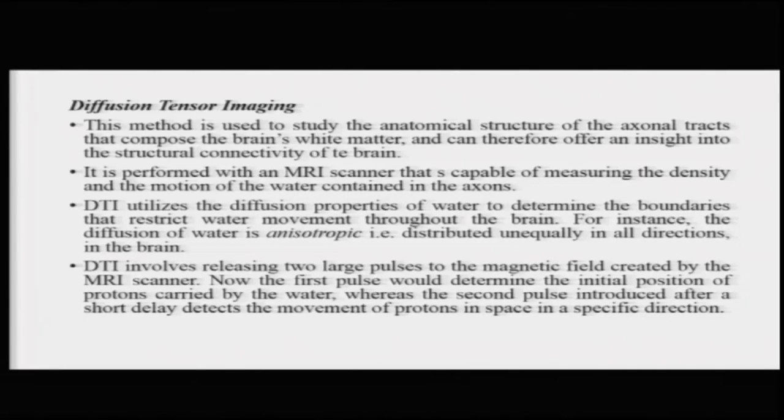An important property of the water contained in axonal tracts is that it is anisotropic, meaning it distributes unequally — it does not spread in all directions but only in some predictable directions in the brain. Diffusion tensor imaging involves releasing two large pulses into the magnetic field created by the MRI scanner. The first pulse determines the initial position of the protons carried by the water, while the second pulse, introduced after a short delay, detects their movement in a specific direction. As the flow of water is constrained by the axons, the resulting image is capable of revealing major white matter tracts of the brain.